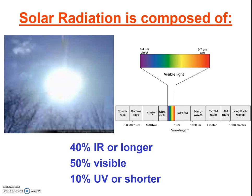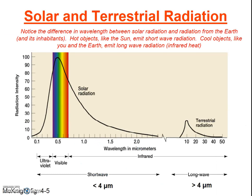Solar radiation that reaches the Earth is composed primarily of visible light, infrared radiation, and a little bit of ultraviolet light as well. Note the difference between solar radiation, which is mostly shortwave radiation — ultraviolet, visible light, and a little bit of infrared — and compare that to the radiation given off by the Earth, which is entirely in the longer infrared region.